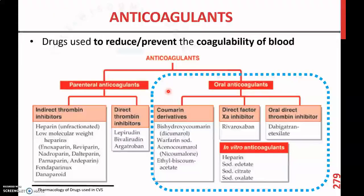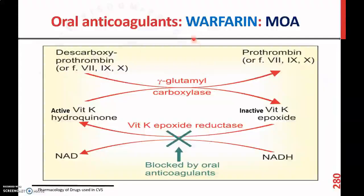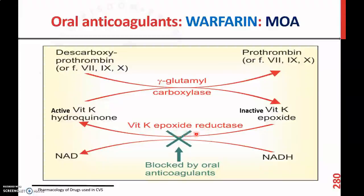Now coming to the second class of anticoagulants — oral anticoagulants, especially the coumarin derivative warfarin. The mechanism of action of warfarin is that it blocks the enzyme vitamin K epoxide reductase. By blocking this enzyme, it prevents the conversion of inactive vitamin K epoxide to active vitamin K hydroquinone.